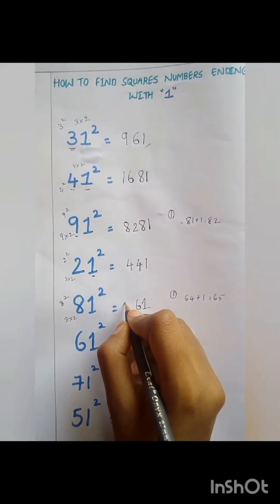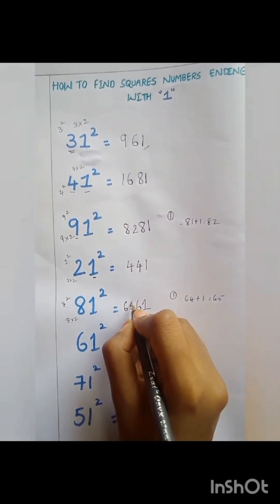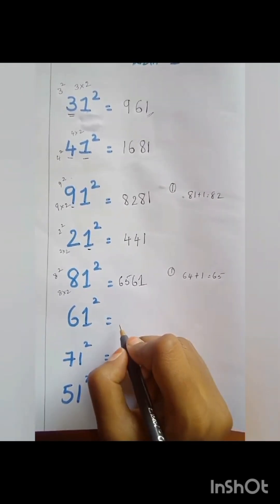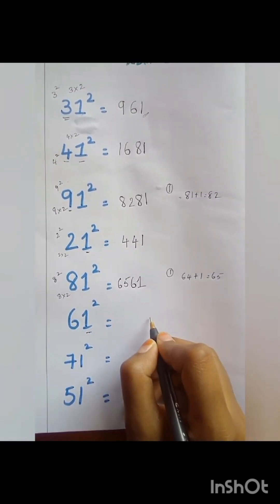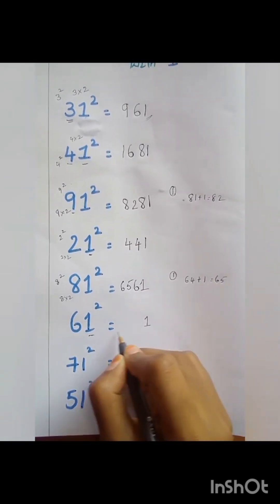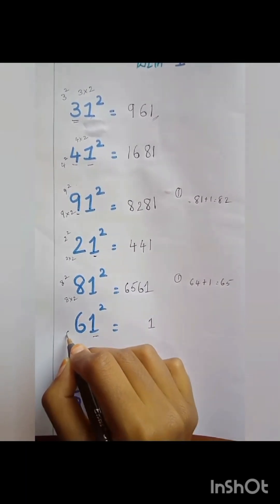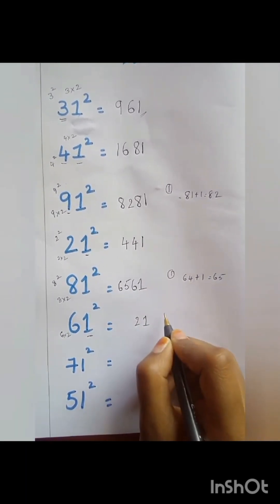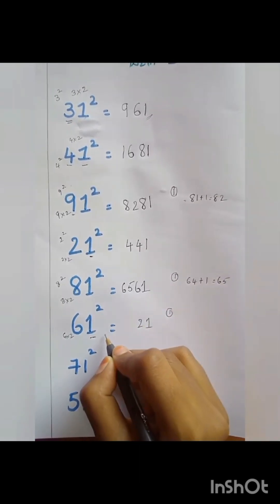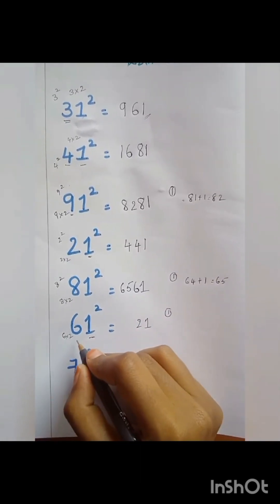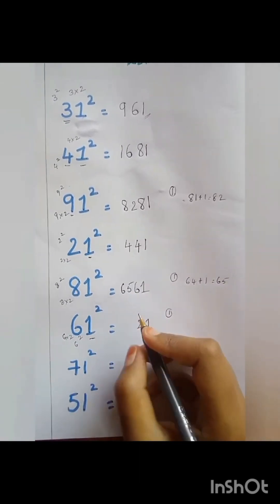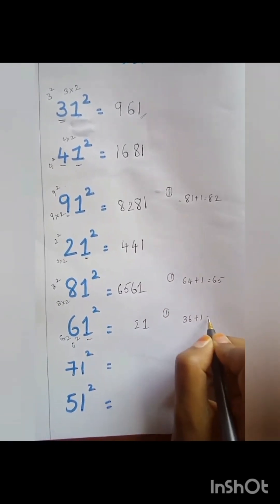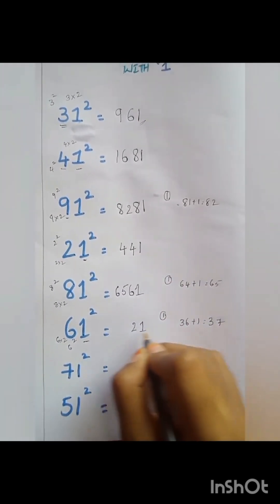Again, 61 squared. Unit digit is equal to 1. And 6 shall be multiplied with 2, that is equal to 12 — 1 shall be carried. 6 squared is equal to 36. Then 36 plus the carried number is equal to 37. The answer is 3721.